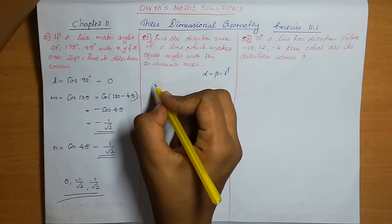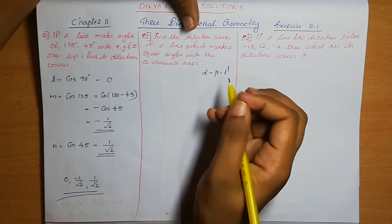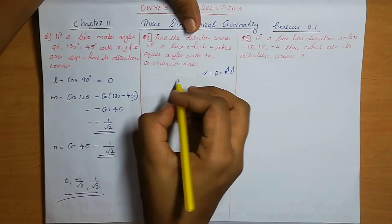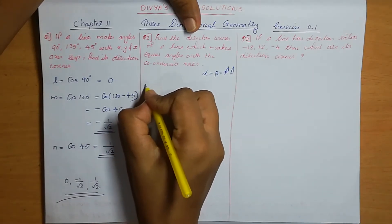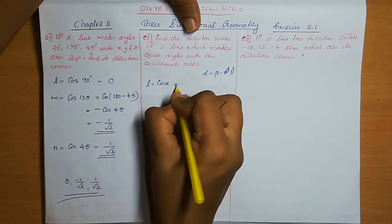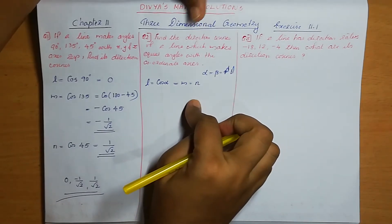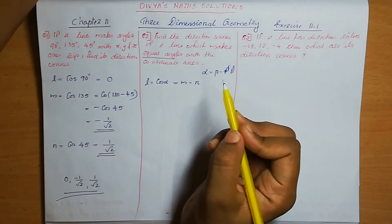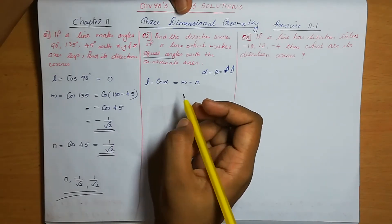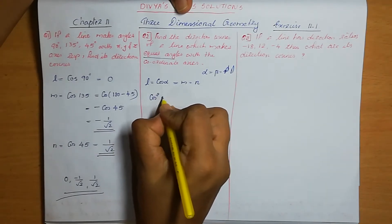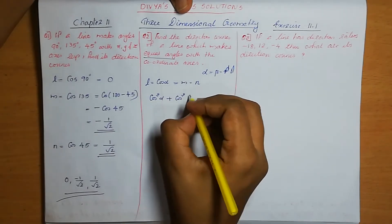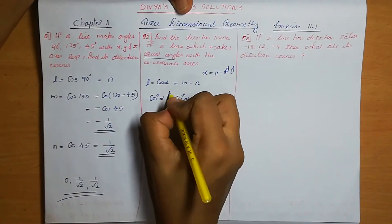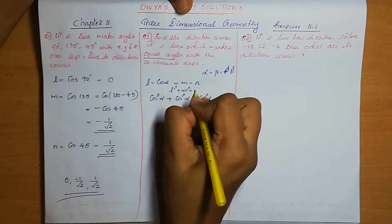Since all angles are the same, we can write L equal to cos alpha, M equal to cos alpha, N equal to cos alpha. So L squared plus M squared plus N squared equals cos squared alpha plus cos squared alpha plus cos squared alpha equal to 1. That means 3 cos squared alpha equal to 1, so cos squared alpha equal to 1 by 3.